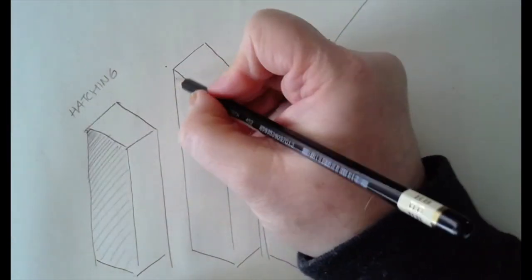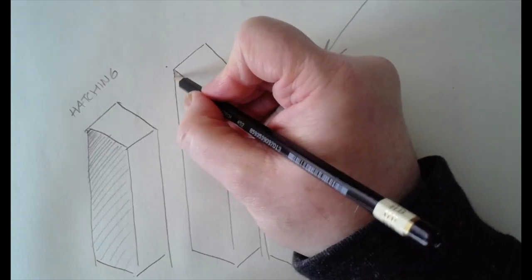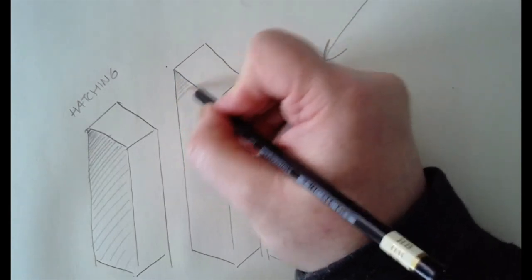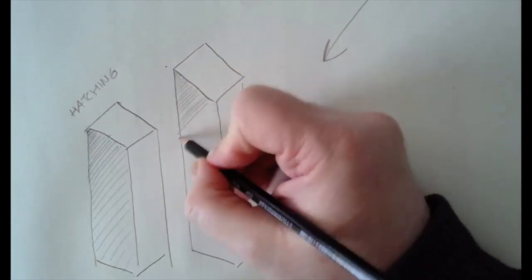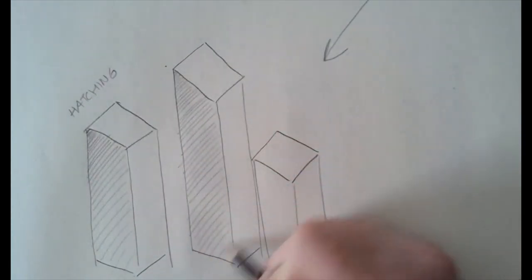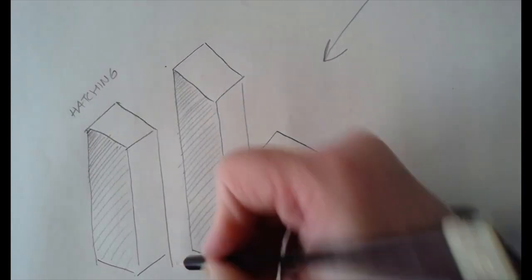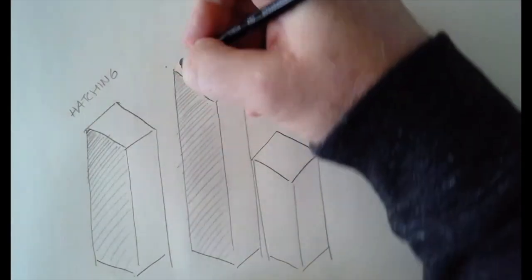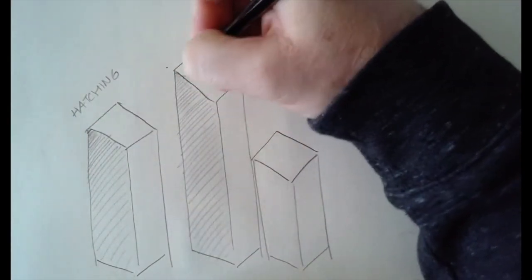Now, on this one, we're going to do what's called crosshatching. I'm going to do the same thing. Lines coming this direction. A little bit farther apart as I go down. And then I'm going to have fun because I'm going to go the opposite direction like this.